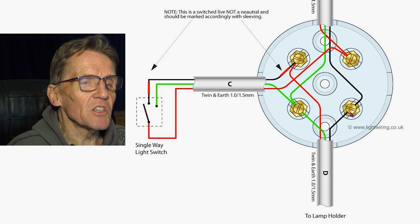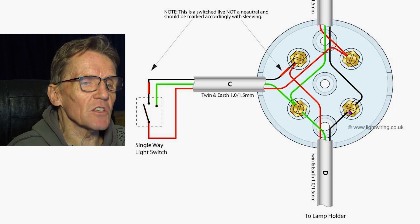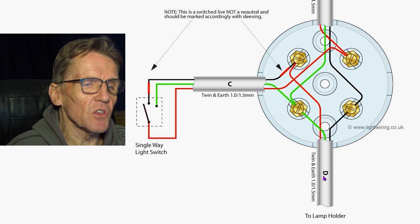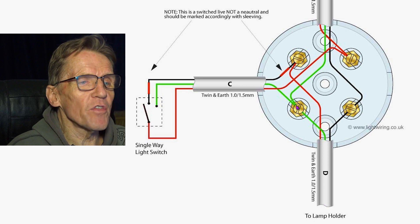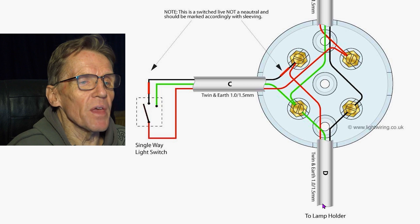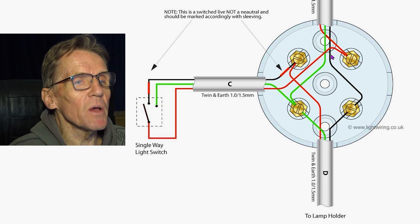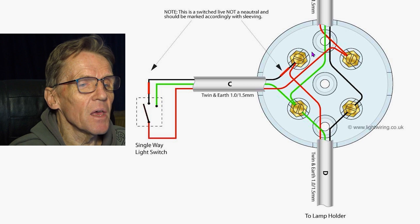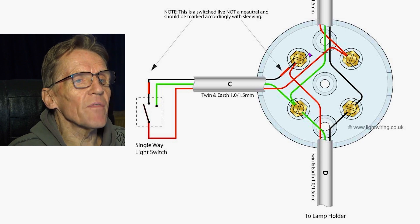So our neutral is coming straight from the neutral because that's not switched, and that goes down to the lamp holder there. Our earth is coming out of our earth terminal and that's going down to our lamp holder there. So the only one we're really worried about is when this live comes in, we need to have that live going down to the switch.